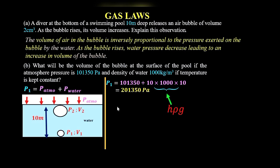At the same time, we are told that the volume of the air bubble at the bottom of the swimming pool is 2 cubic centimeters, and therefore V₁ is 2 cm³.